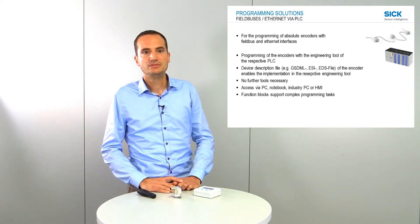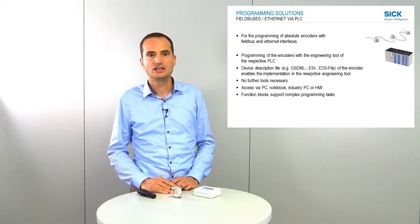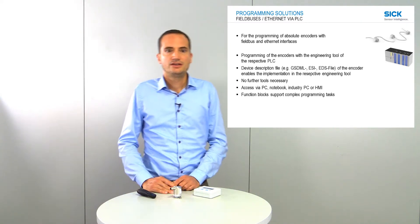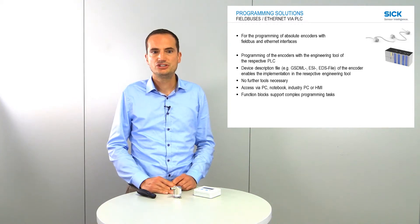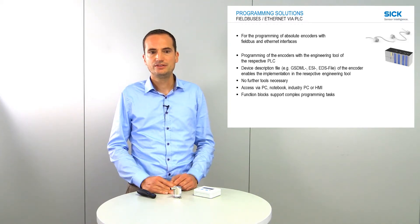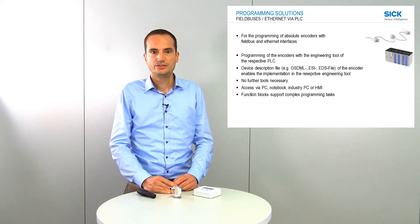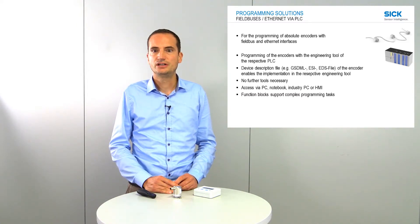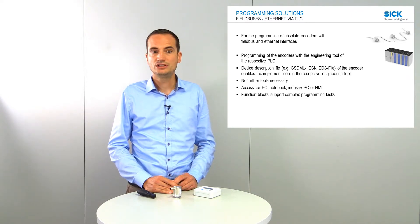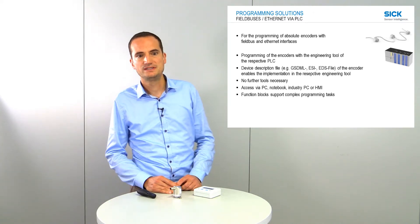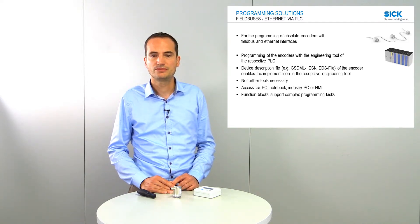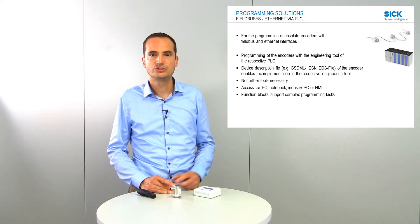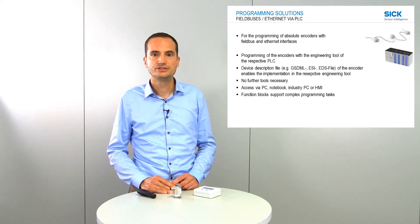The next possibility is programming via the PLC-specific engineering tool, for absolute encoders with fieldbus and Ethernet interfaces. Programming is done with the engineering tool of the respective PLC. You need a device description file — for example, the GSD, GSDML, or EDS file of the encoder — which enables implementation of the encoder in the engineering tool. Examples of engineering tools are TIA Portal from Siemens or TwinCAT from Beckhoff. You do not need any further tools, and access is via PC, notebook, industrial PC, or HMI. You can also use function blocks that support complex programming tasks, and configuration changes can be made directly in the application.